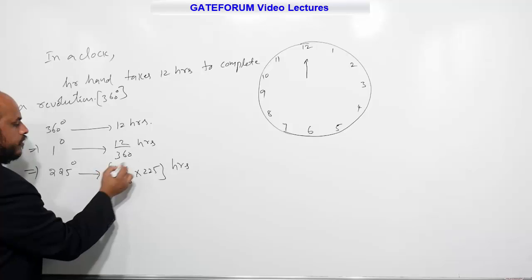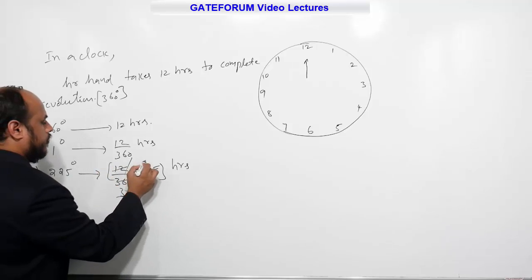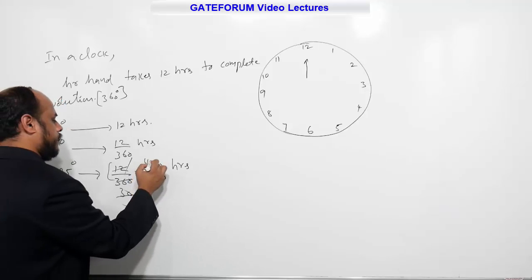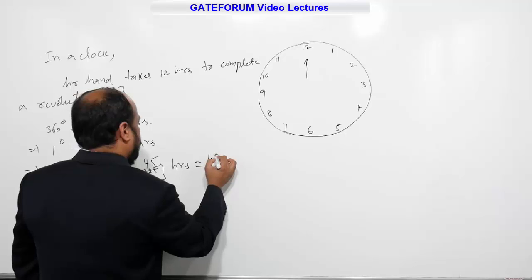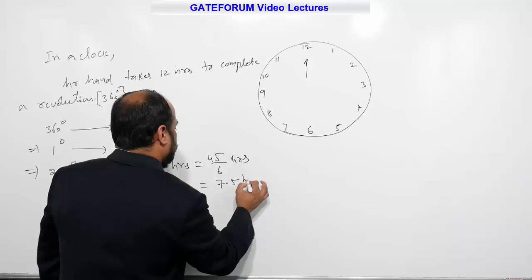Just we will calculate here. 12 ones are 12, 30s are... Again here 5, 6, 5, 4s are 5, 5, 5s are. So, 45 by 6 hours, it is nothing but 7.5 hours.